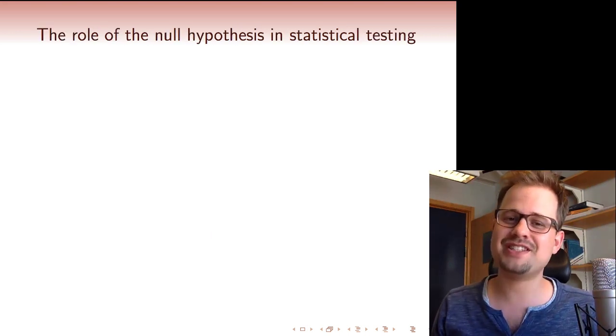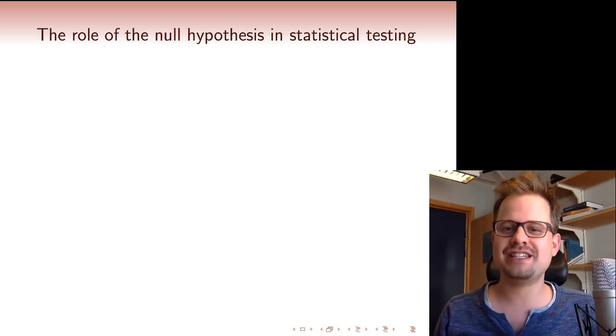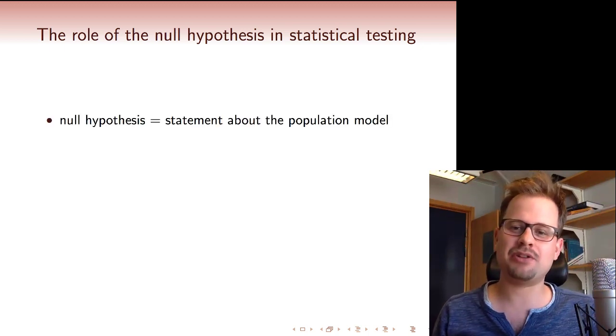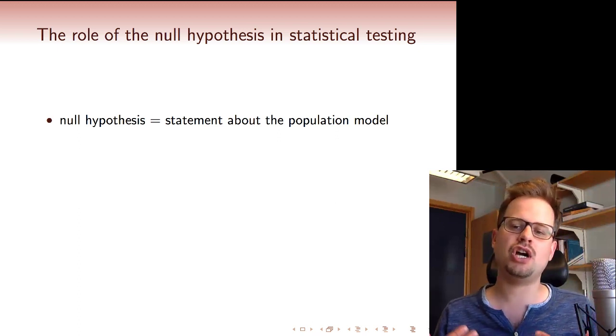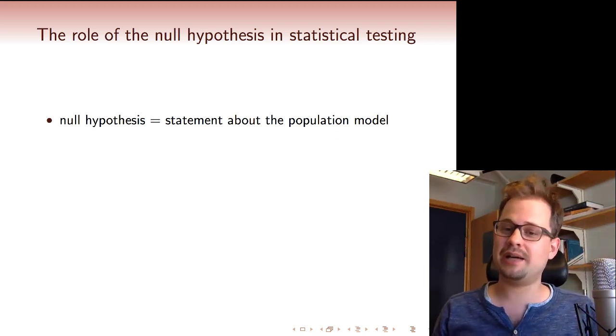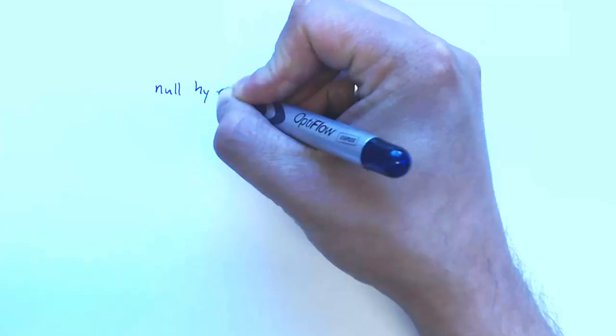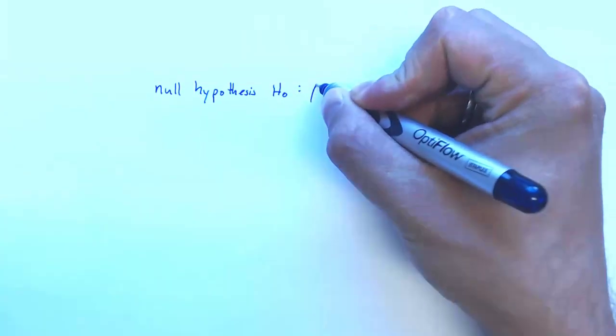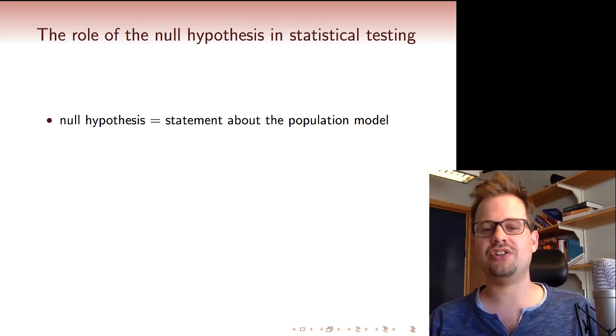A very important concept in statistical testing is the null hypothesis. The null hypothesis is a statement about the population model. It could, for example, be a statement about the true causal effect. In our study time example, the null hypothesis could be, for example, beta1 is equal to 5, so that for every hour that you study, you get five extra points on the exam.